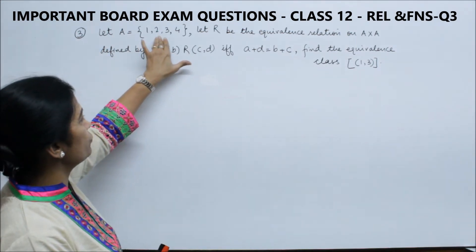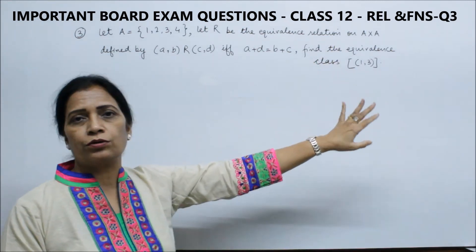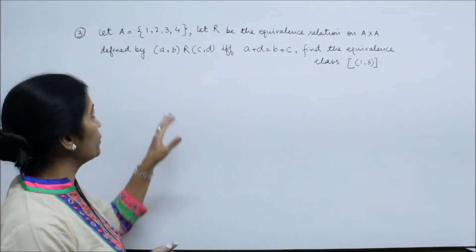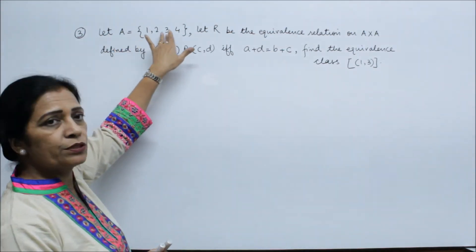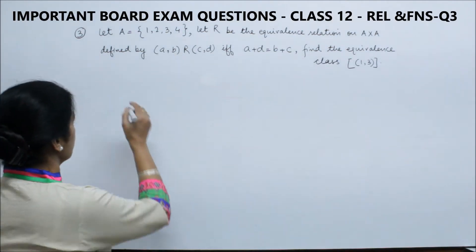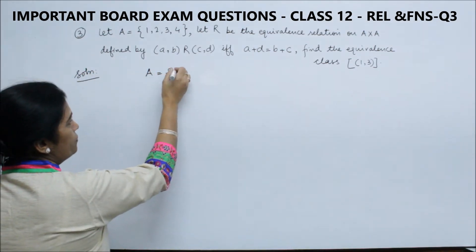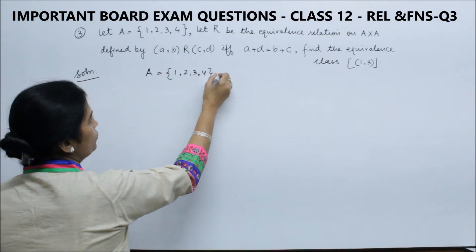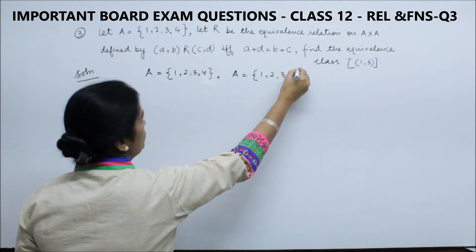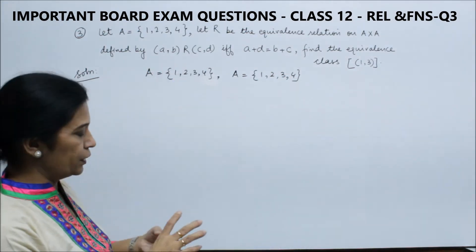A given is 4 elements and R is the equivalence relation on A cross A. A cross A means here, we will relate A set of elements with A set of elements. Because A cross A, we will relate to this 2 times so that the understanding will be easier. Now, defined by this relation.